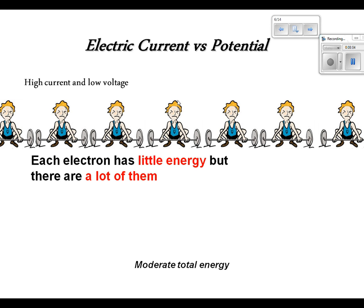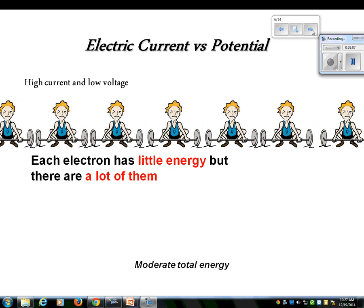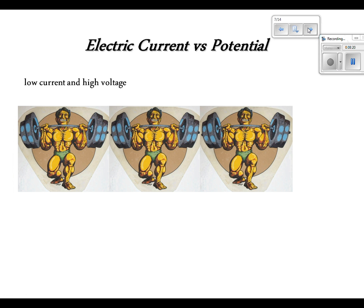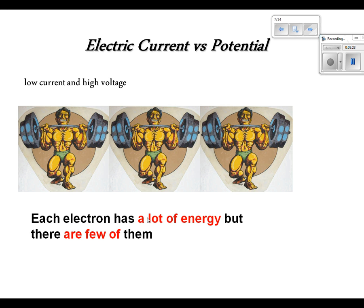What's changing in the next picture? They can lift more, except they're not as many of them. Exactly. So, what are we going to write? Each electron has lots of energy. Low current, high voltage. Each electron has lots of energy, but there's not too many of them. So, it's still pretty powerful. There's a fair amount of energy. I think we're going to have here moderate total energy. So, the current is related to how many, and the voltage is the strength.